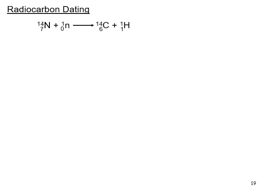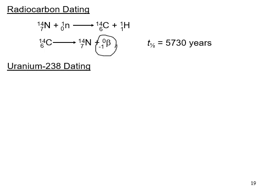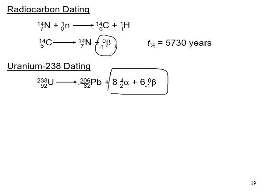This is why radiocarbon dating is possible. You take a piece of material that was once living, look at the proportion of carbon-14 remaining, and that gives information about its age. Carbon-14 decays at a known rate with a half-life of 5,730 years, undergoing beta emission. Uranium is also used for dating rocks using the uranium-238 to lead-206 decay series, since we know the path and timing of each step.